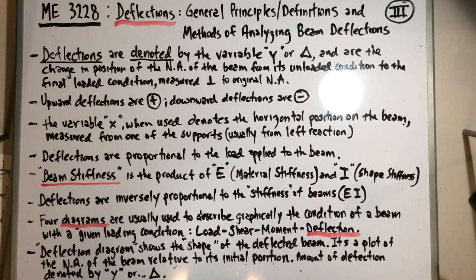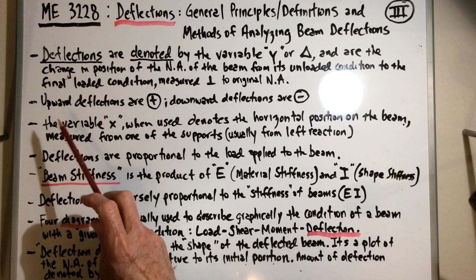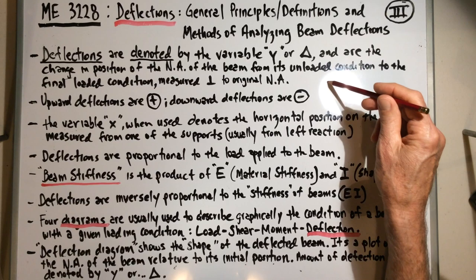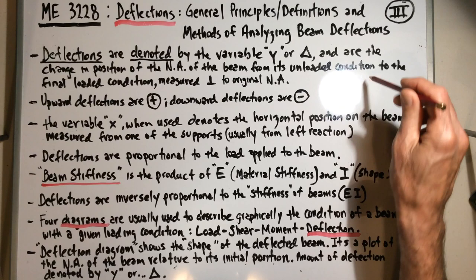In a minute I'll show some actual diagrams of what these deflection curves look like. Upward deflections are defined as positive, and downward deflections are negative. Normally with a vertically downward load the deflections will be negative, but with overhanging beams they could be positive on one side. Upward deflections are positive; downward deflections are negative.